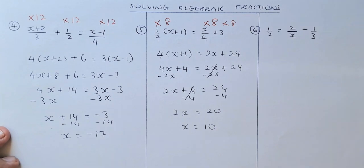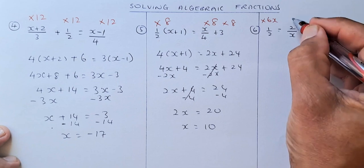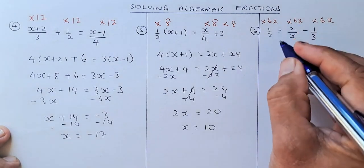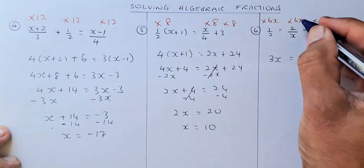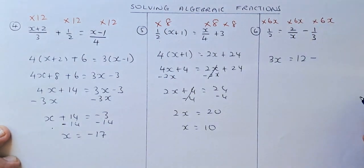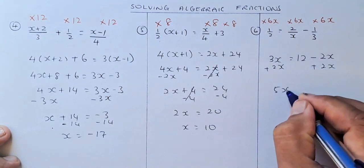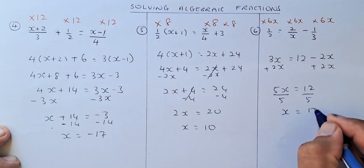Last but not least, the hardest one: a half equals to 2 over x minus 1 third. The lowest common denominator this time is 6x because there's an x. Multiply by 6x on every term. 6x divided by 2 gives 3x on the left hand side. Then 6x over x cancels, giving 6 times 2 which is 12. And 6x divided by 3 gives 2x. So the equation becomes 3x equals to 12 minus 2x. Plus 2x on both sides gives 5x equals to 12. Divide by 5: x equals to 12 over 5.